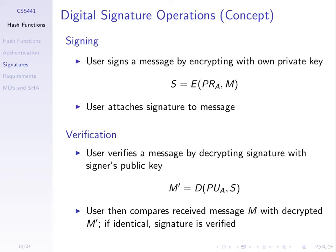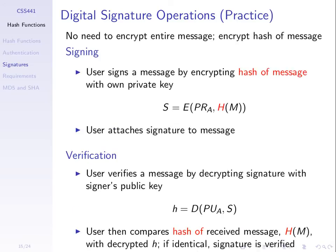In practice, we don't encrypt the entire message — we encrypt a hash of the message. This is the practical digital signature, and from now on when I refer to a digital signature, we use the hash of the message. We have a message M. To sign the message and generate the signature S, we encrypt using my private key the hash of that message. Hash the message, encrypt with my private key, and I get signature S. S is quite small because the hash value is small, so even if the message is 10 gigabytes long, the signature is a fixed size.